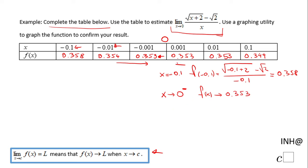When I go from the right side, numbers larger than 0, I have the same type of behavior. The function is getting closer and closer to the same value.